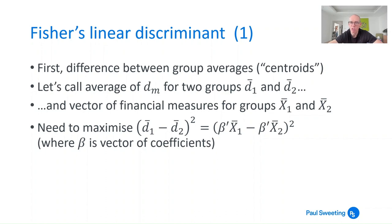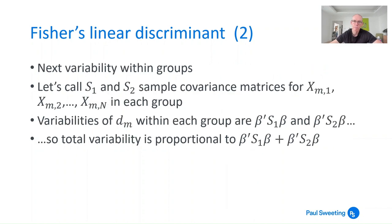What we need to maximize is the difference between the two average discriminant functions D-bar one and D-bar two. If you take D-bar one minus D-bar two and square it, you get something always positive that should be as large as possible. Since D_m equals beta_1*x_1 + beta_2*x_2 and so on, if you've got beta as a vector then (beta-transpose * x-bar-one minus beta-transpose * x-bar-two) all squared equals (D-bar one minus D-bar two) all squared. Beta is the vector of coefficients. Next we look at the variability within the groups.